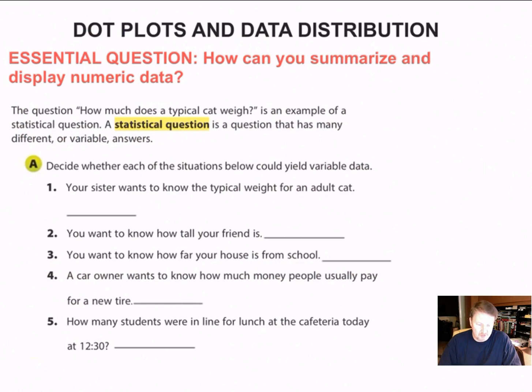All right, so let's talk about each one. Number one, your sister wants to know the typical weight for an adult cat. When we're talking about typical, that's when we're talking about averages. You may have a cat that could weigh seven, eight pounds. I had an adult cat that weighed 25 pounds. And I'm sure there's weights everywhere in between. So that is definitely a statistical question. We will say, I'll put an S for statistical.